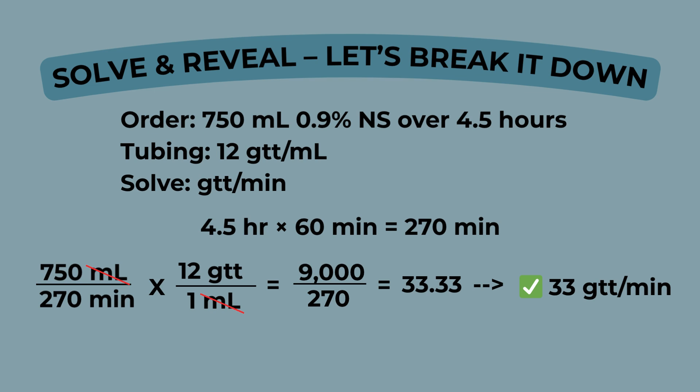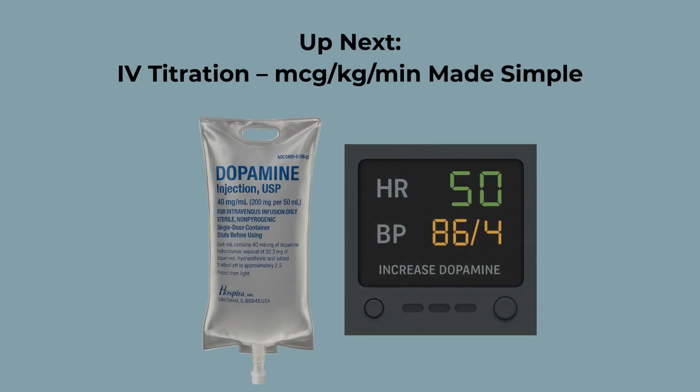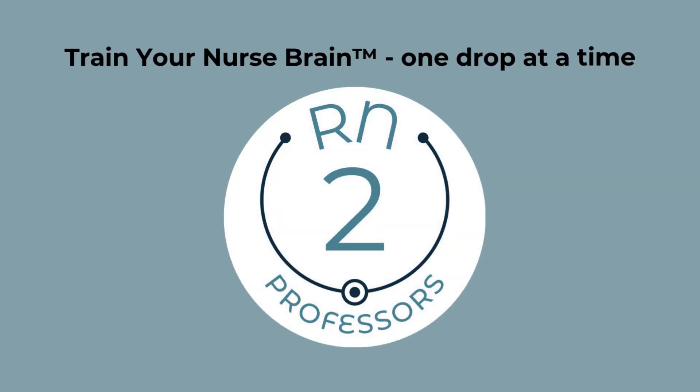Did you get it right? Let us know in the comments. You just calculated IV drip rates without a pump, using only the order, the tubing, and a clear setup. You learned how to use the drop factor, set up a dimensional analysis chain, cancel units, and round to a whole drop. That's not just math — that's clinical judgment in action. In the next episode, we'll build on what you've learned by diving into weight-based IV titration, like calculating micrograms per kilogram per minute for meds that change based on the patient's response. These are the kinds of calculations that make new nurses nervous, so we'll break them down step by step, just like we did here. Until then, keep practicing dimensional analysis the way you'd use it in real life: clear, safe, and clinically smart.